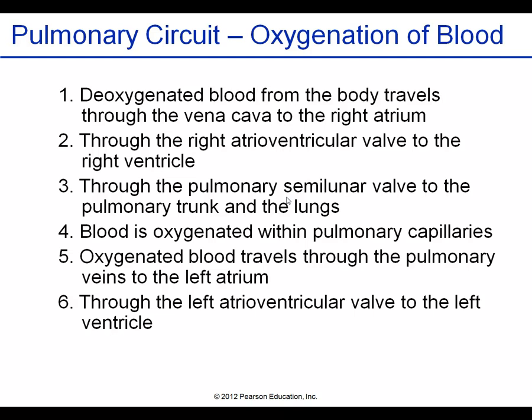Here is the pathway: deoxygenated blood from the superior and inferior vena cava enters the right atrium, passes through the tricuspid (atrioventricular) valve into the right ventricle, then to the pulmonary artery where it gets oxygenated in the lungs, returns via the pulmonary veins to the left atrium, flows through the bicuspid (mitral) valve into the left ventricle, through the aortic valve, into the aorta, and into the systemic circulation.